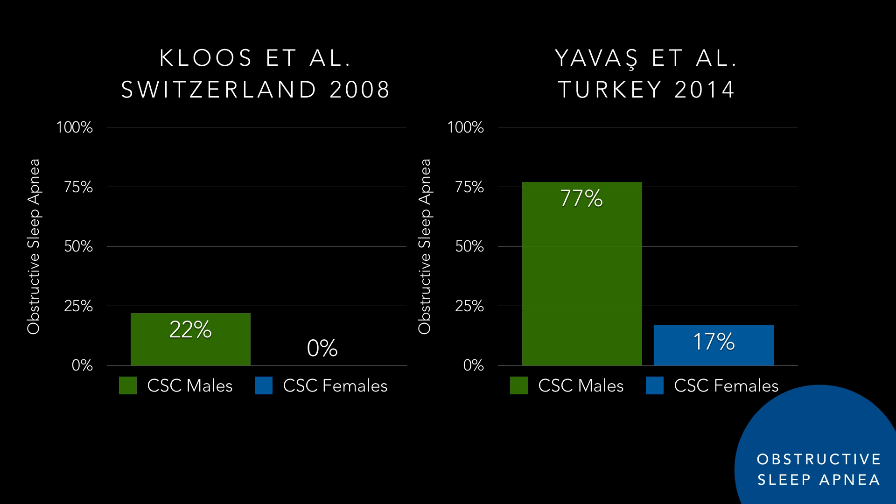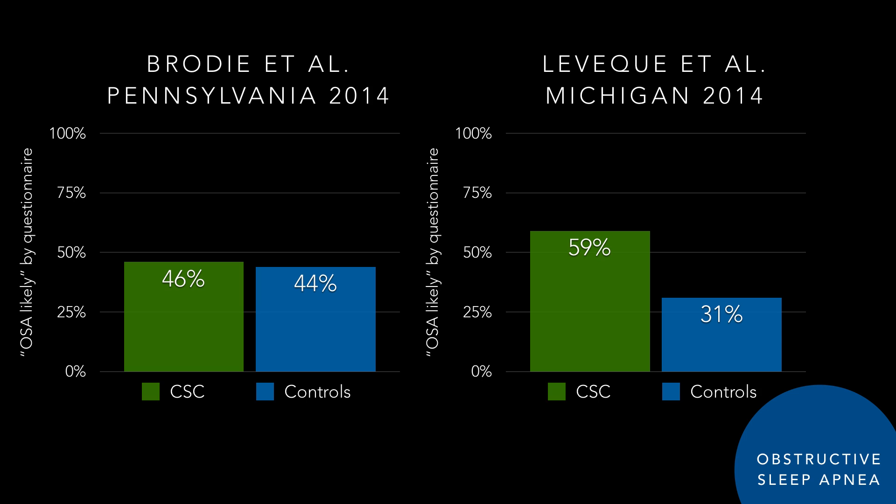It may or may not be higher than the general population. Both of these studies gave Berlin questionnaires, which is why the Y-axis says 'OSA likely.' Levesque, from David Zack's group in Michigan, had 22 men and 7 women, excluded steroid users, and gave them Berlin questionnaires. Age- and gender-matched controls showed roughly double the rate of likely OSA in central serous patients compared to controls. Brody in Pennsylvania in 2014 did a similar study with Berlin questionnaires and controls, but this time they also matched for body mass index — and their conclusion was that controlling for BMI may explain why they did not find a difference. They excluded steroid users and had 48 patients.